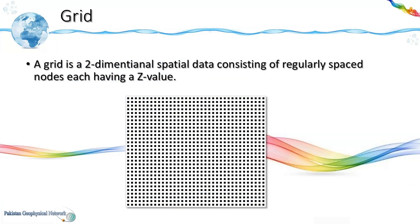We start with a grid which is a two-dimensional spatial data comprising of regularly spaced nodes. All these black points are the nodes and each node has an xy coordinate which is its position such as latitude longitude and a z value which is the parameter being mapped.